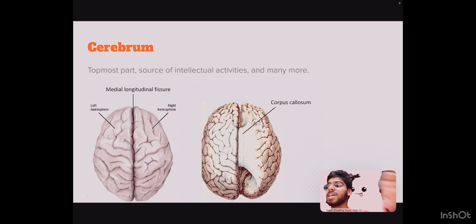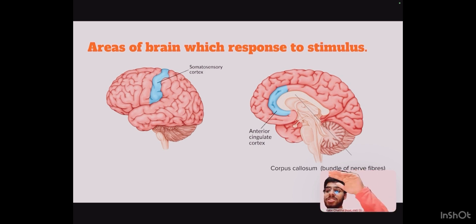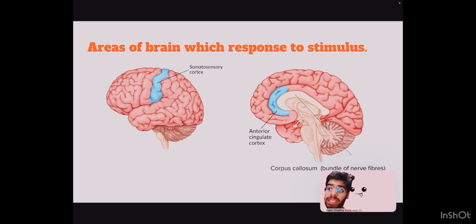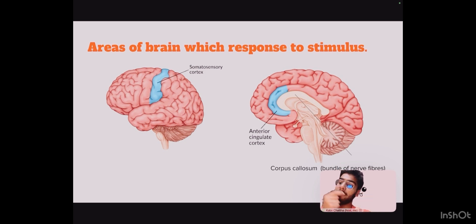Now, what happens when the signal reaches the brain? There are two areas of the brain that respond to the stimulus of touch. The first is the somatosensory cortex, which analyzes the touch and is located on the upper part of the cerebrum, as you can see in the diagram. The second is the anterior cingulate cortex, which controls the feeling of pleasure — 'anterior' means front — and it is located in the medial wall of each cerebral hemisphere, above and adjacent to the corpus callosum. Both combined create the tickle response, which is laughter, traveling through motor neurons to the muscles of the mouth and body.